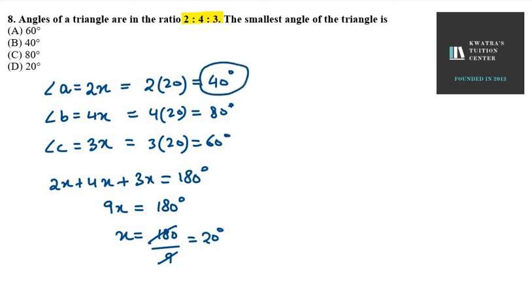So, out of these all, the smallest one is 40 degrees. That means your answer is B part. That's your answer for question number 8. Please like, share and subscribe to our channel. Thank you.